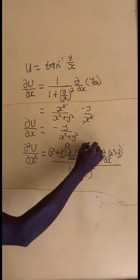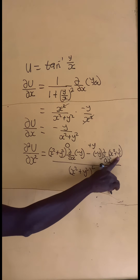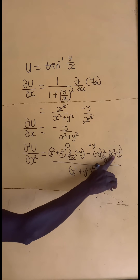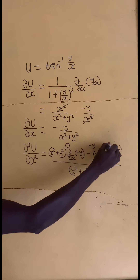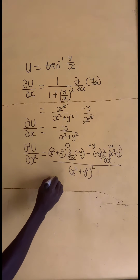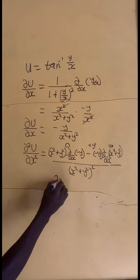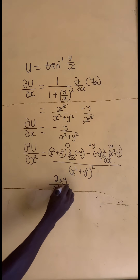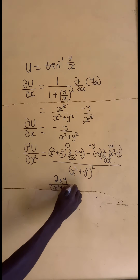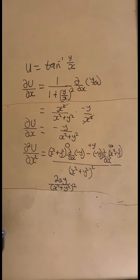Negative times negative gives positive. If I differentiate y squared partially with respect to x, I get 0. If I differentiate x squared partially with respect to x, I get 2x. So I multiply 2x by positive y to get positive 2xy. All divided by x squared plus y squared, all squared. This gives del squared u on del x squared.